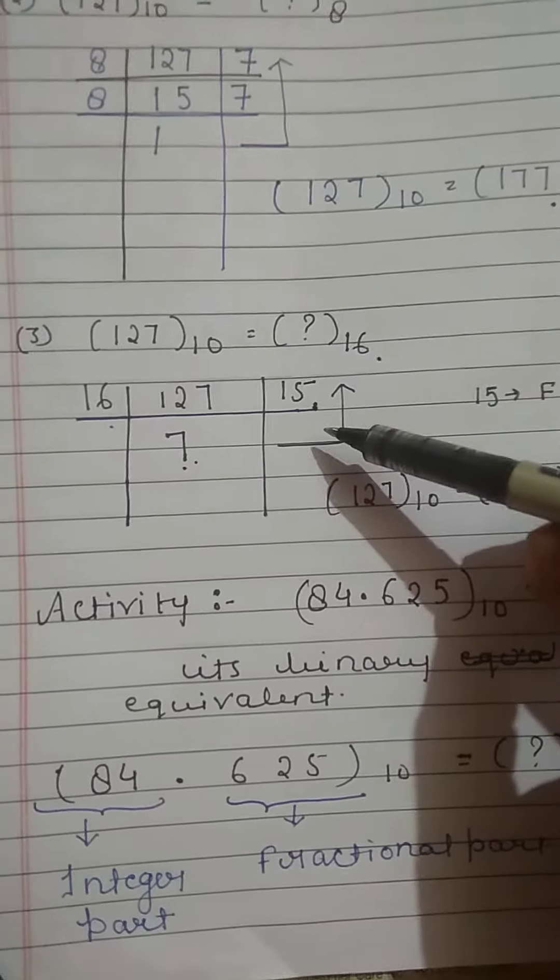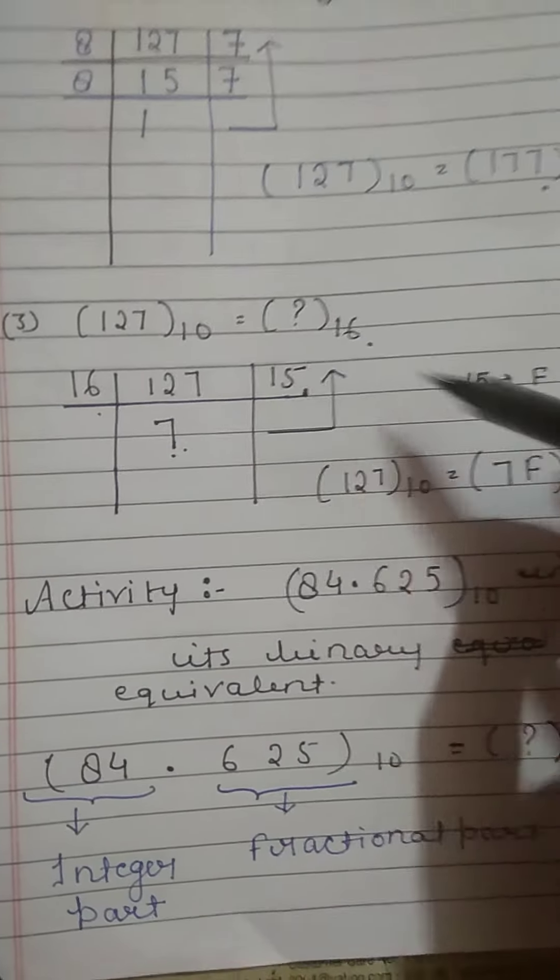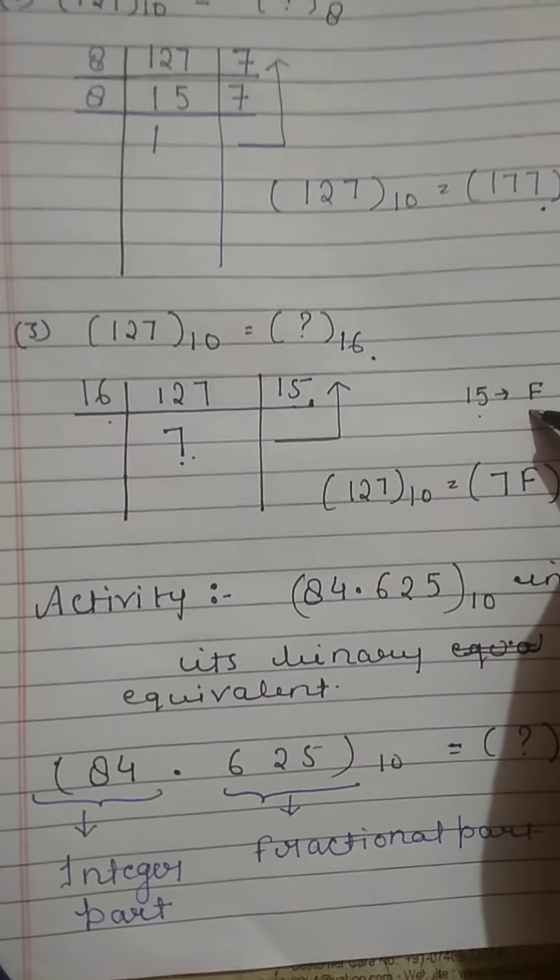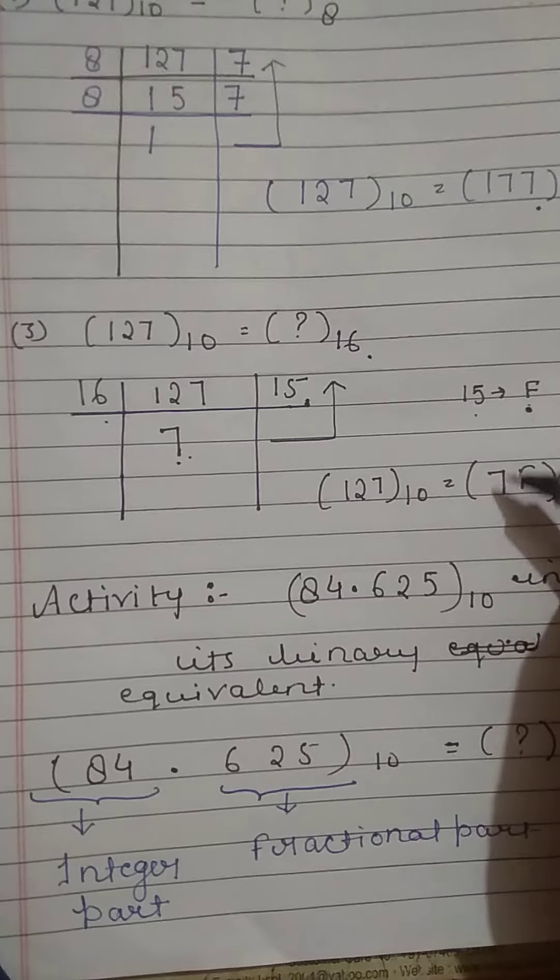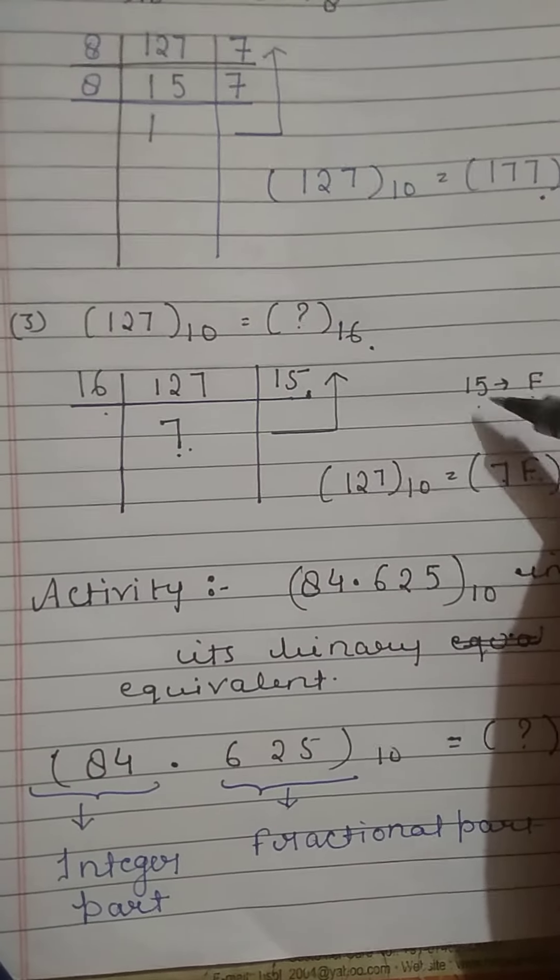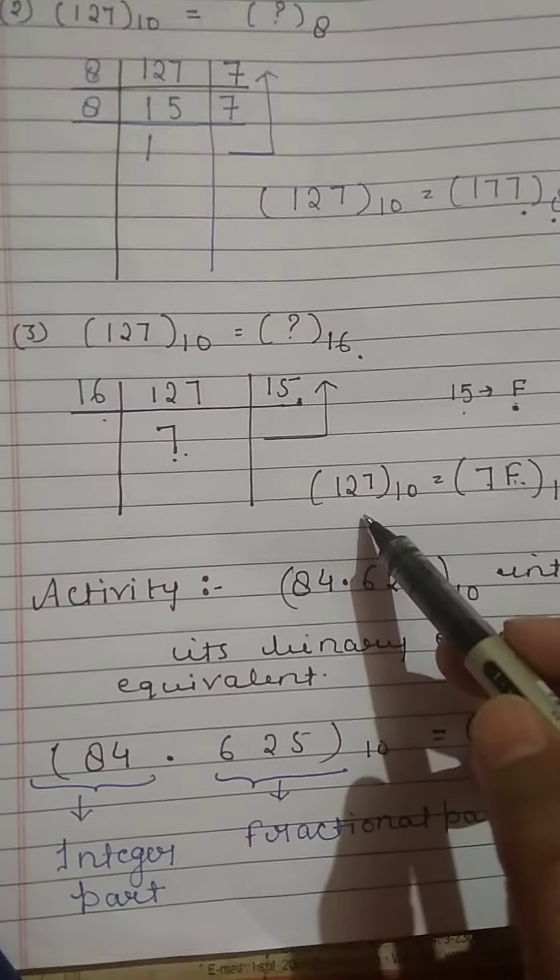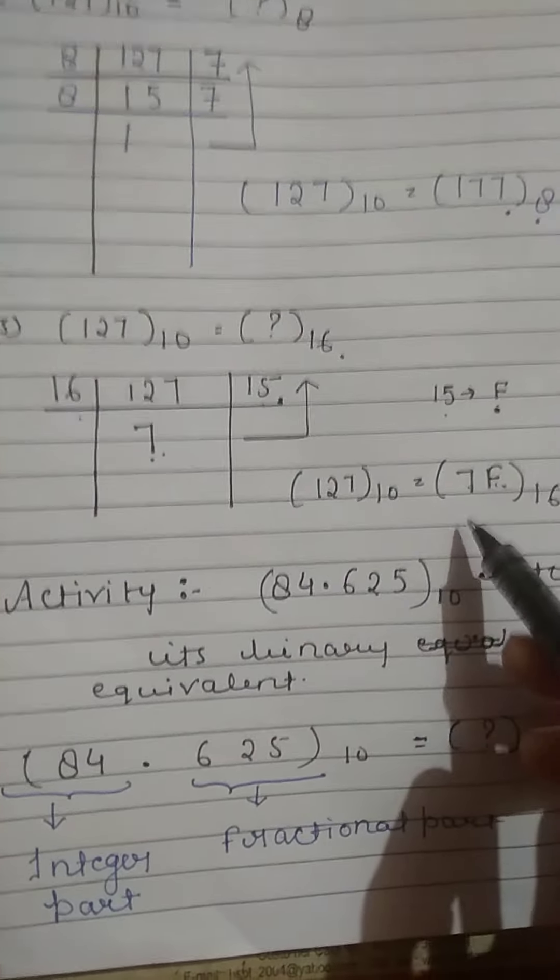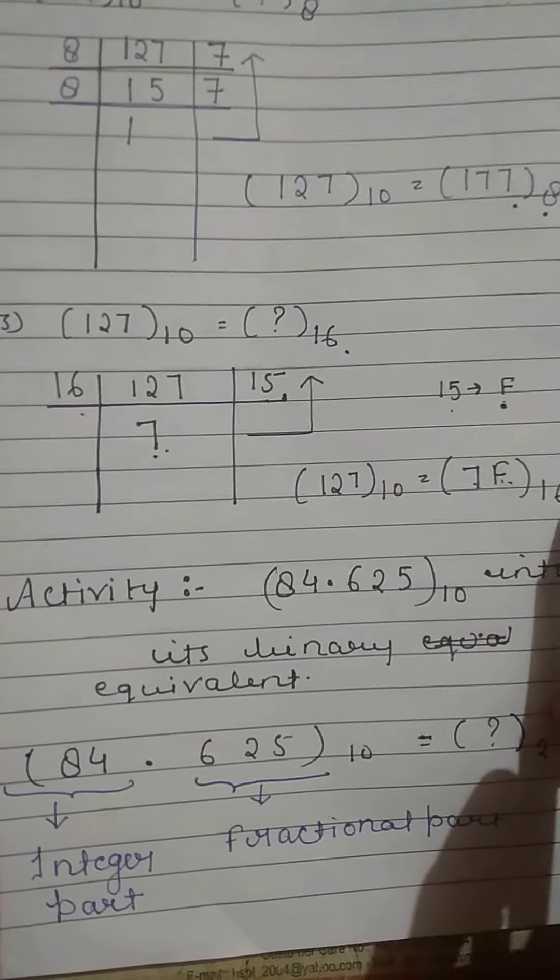Note down the digits from downward to upward. 15 is equivalent to F in hexadecimal number system. So we write 7F, where F is equivalent to 15. Therefore, 127 decimal equals 7F in hexadecimal.